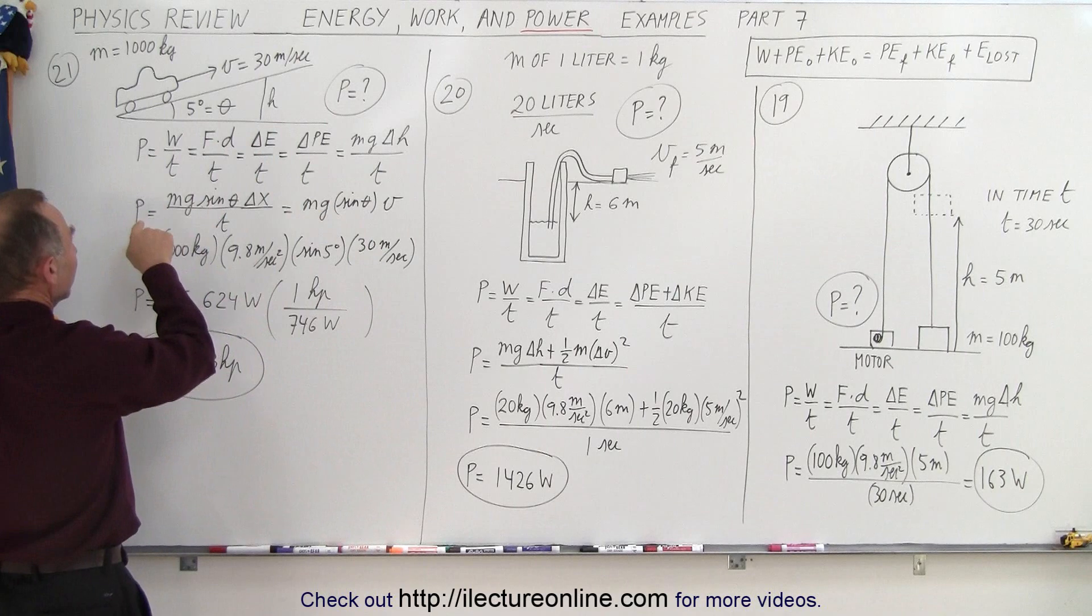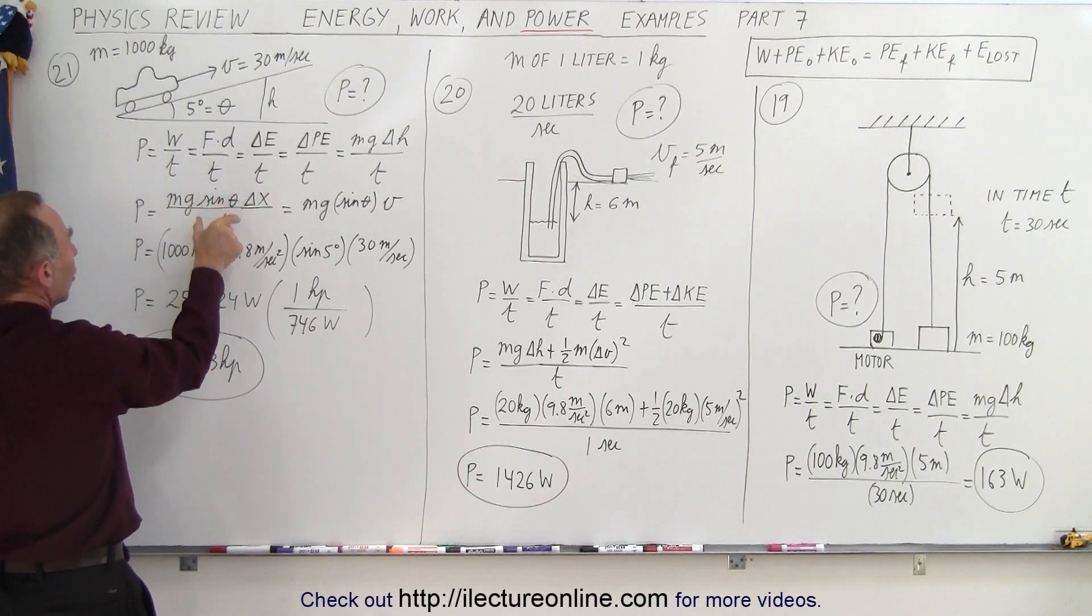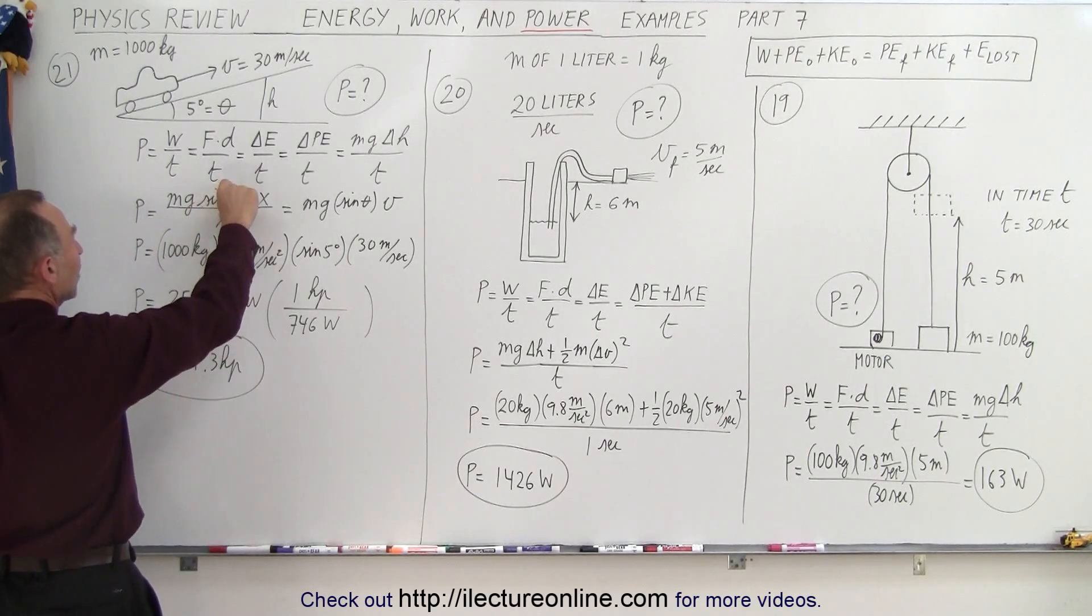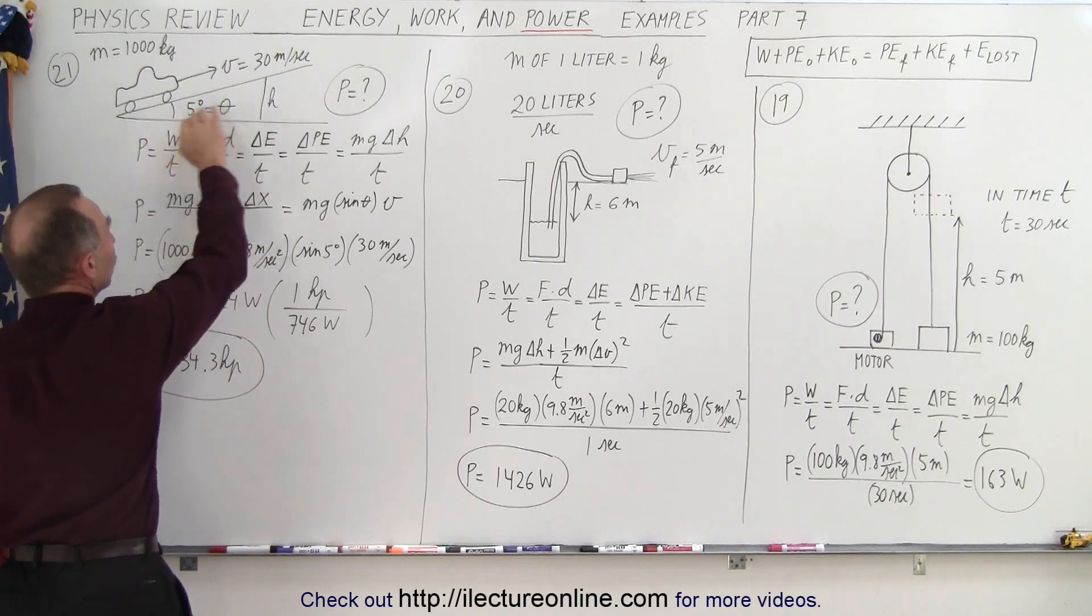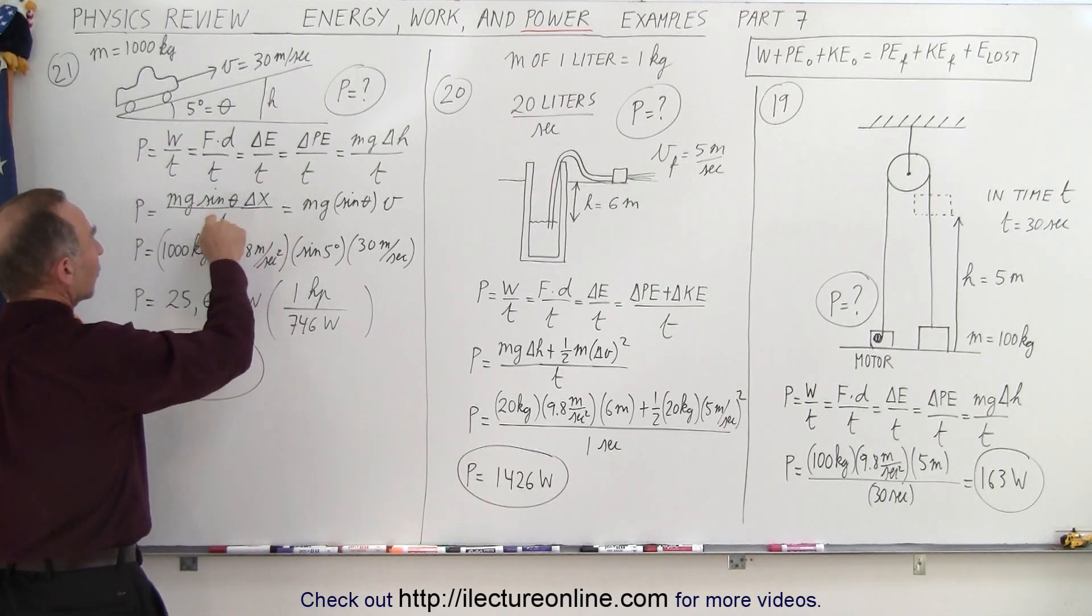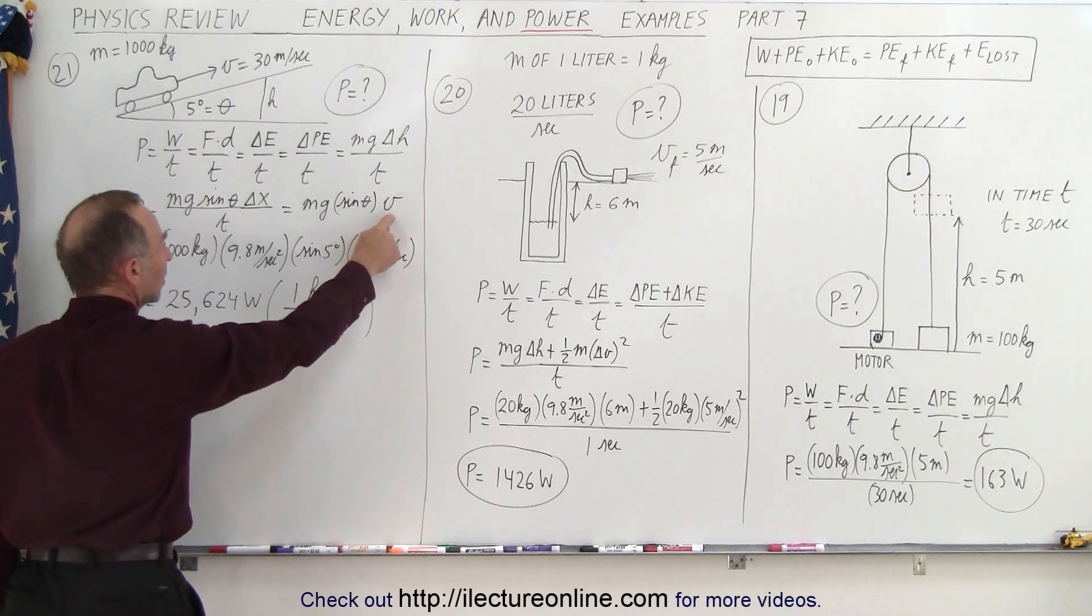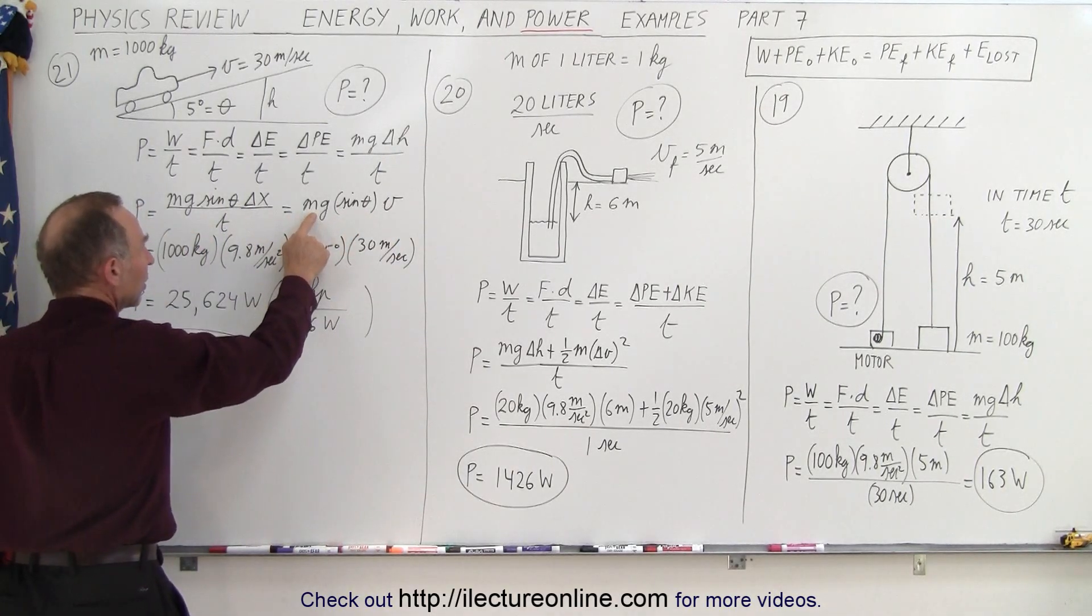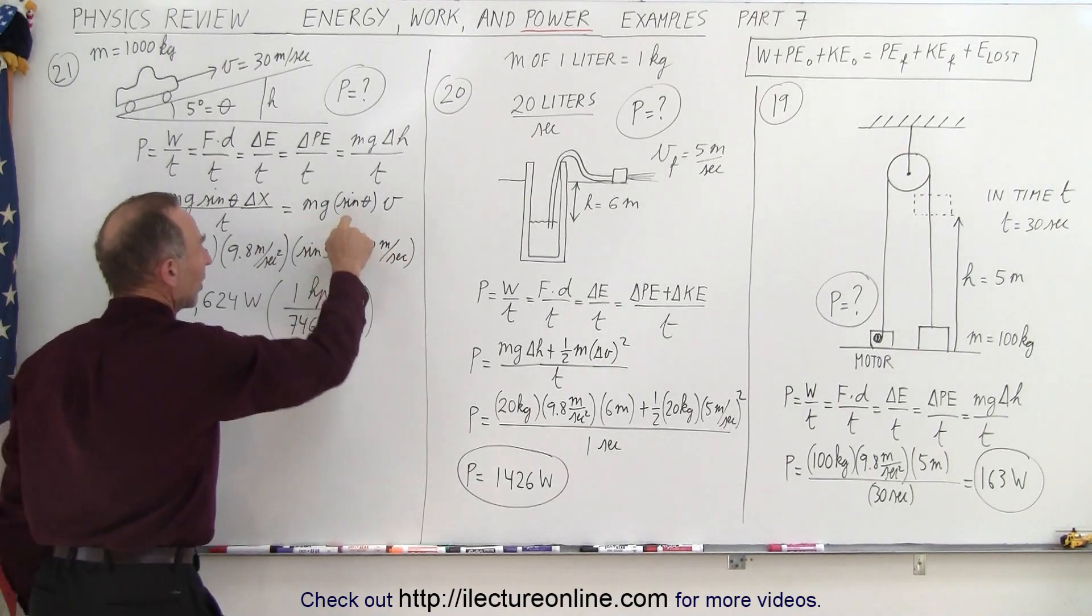So to calculate the power, we take the change in energy over time, in this case the change in potential energy, which is the mg times the change in height, and the height will be the distance traveled delta x times the sine of theta. Now delta x over time, that can be considered the velocity, so essentially the power is the weight of the car times the velocity times the sine of the angle.